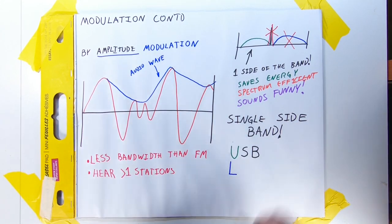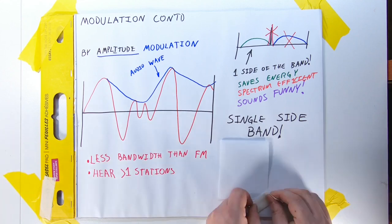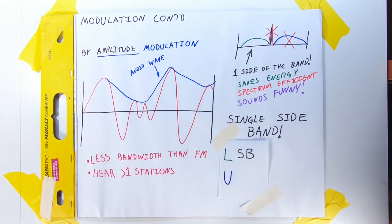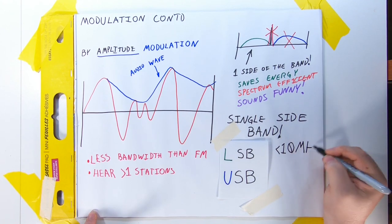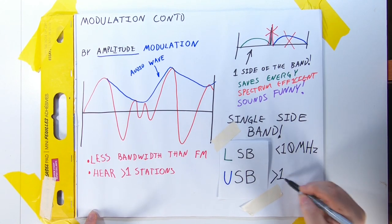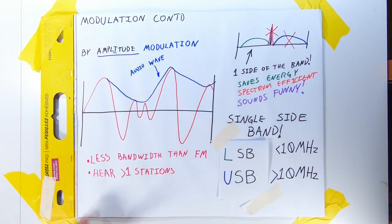One question though, which side of the band do you use? Well, of course, both. Simply, below 10 MHz, we use lower sideband. Above 10 MHz, we use upper sideband. It's a convention, but it is easy to remember.